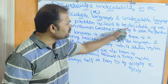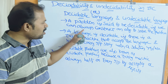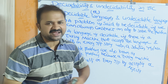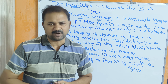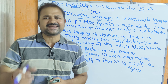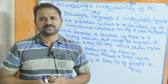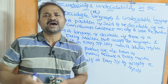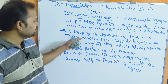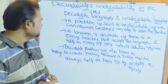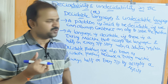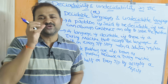A problem is said to be decidable if we can always construct an algorithm to solve the problem, or in place of an algorithm, we can write a Turing machine to solve the problem. So a decidable problem means we can solve that problem. A language is decidable if there is a Turing machine that accepts the language.